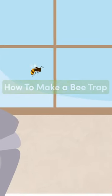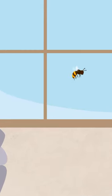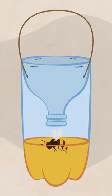If a bee or a wasp has made its way into your home, you can easily catch it with a trap made from a plastic bottle.